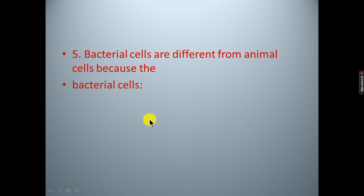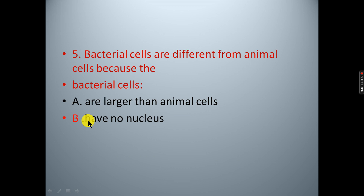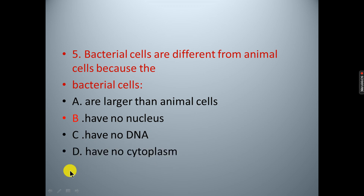Question five: Bacteria cells are different from animal cells because: A. bacteria cells are larger than animal cells; B. they have no nucleus; C. they have no DNA; D. they have no cytoplasm. The correct answer is B — bacteria have no nucleus.